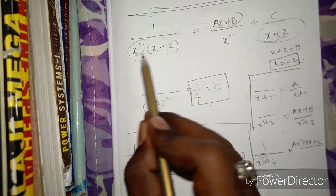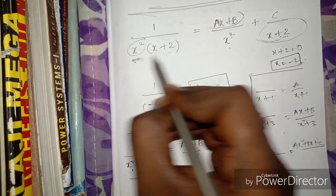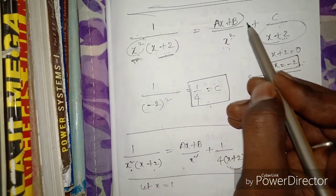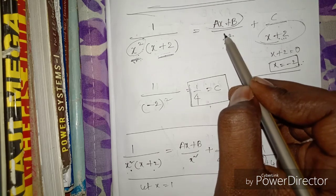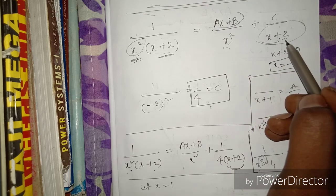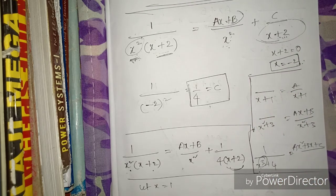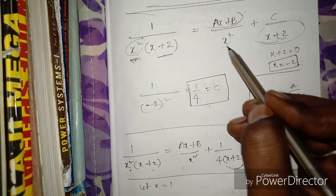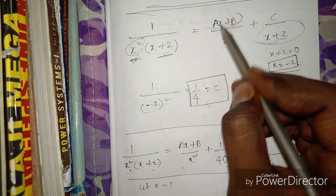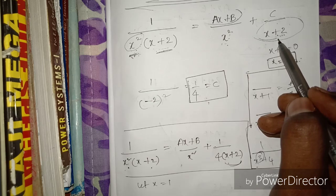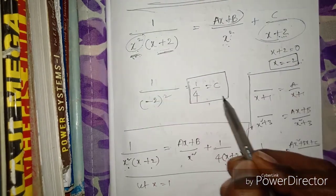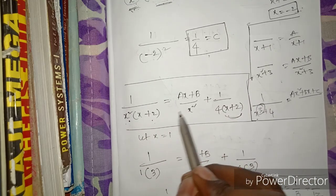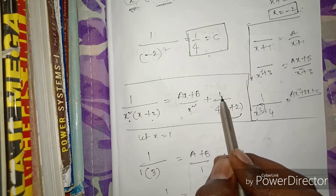One more recap: for 1/(x²(x + 2)), since x² is in the denominator, we write (Ax + B)/x² and C/(x + 2). This gives the same setup. From our two equations A + B = 1/4 and 2A + B = 0, we get A = -1/4 and B = 1/2.